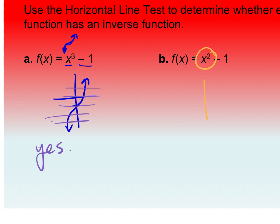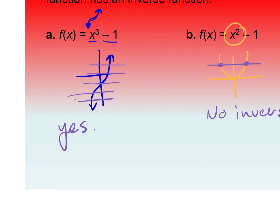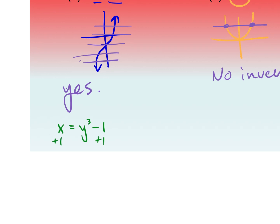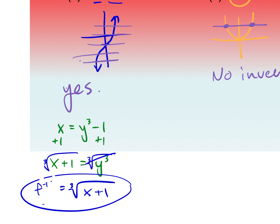For part b, we have x² — if we put that on a graph, a horizontal line goes through two points of our graph, so this does not have an inverse. For extra practice, let's find the inverse of f(x) = x³ − 1. Switch x and y: x = y³ − 1. Solve for y: add 1 to both sides, x + 1 = y³. To get rid of the cube, take the cube root of both sides. So f inverse equals the cubed root of (x + 1). That's our inverse.